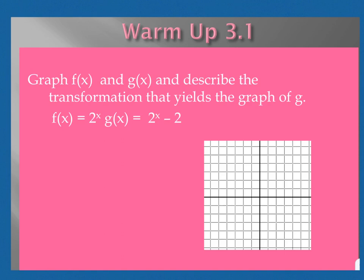And we talked about graphing based on either just a t-chart or graphing based on transformations. So this one says graph f(x) and g(x) and describe the transformation that yields the graph of g. So if I were to just look at the equations from f(x) to g(x), what's the shift? Down two places, right?